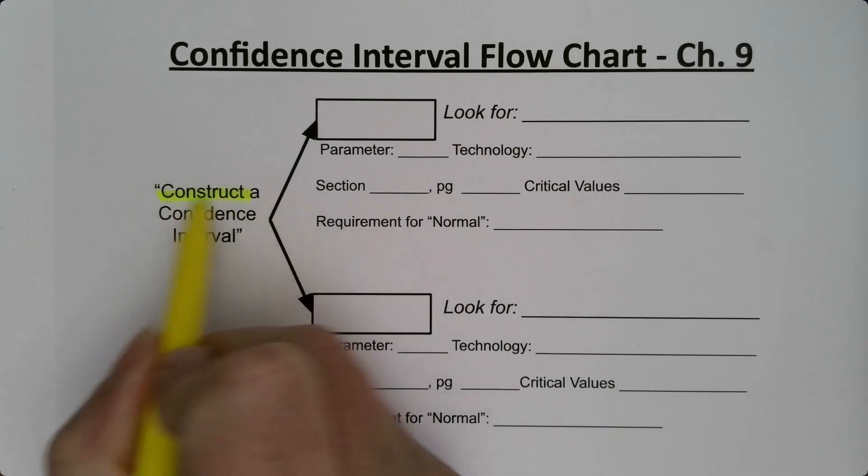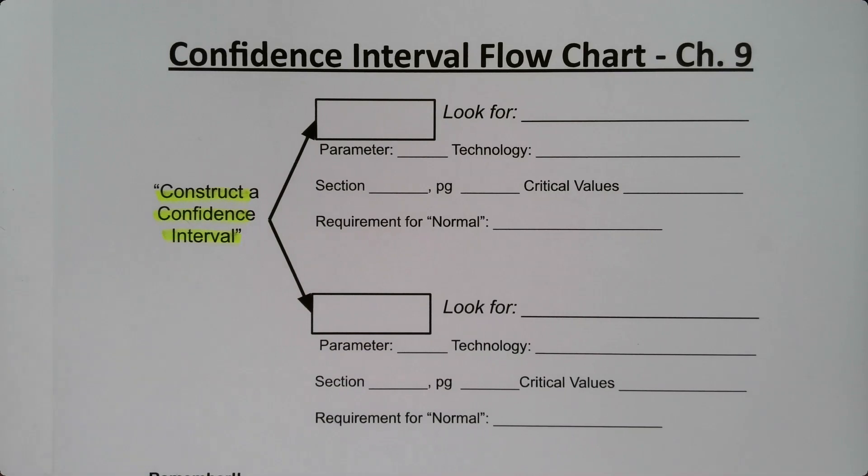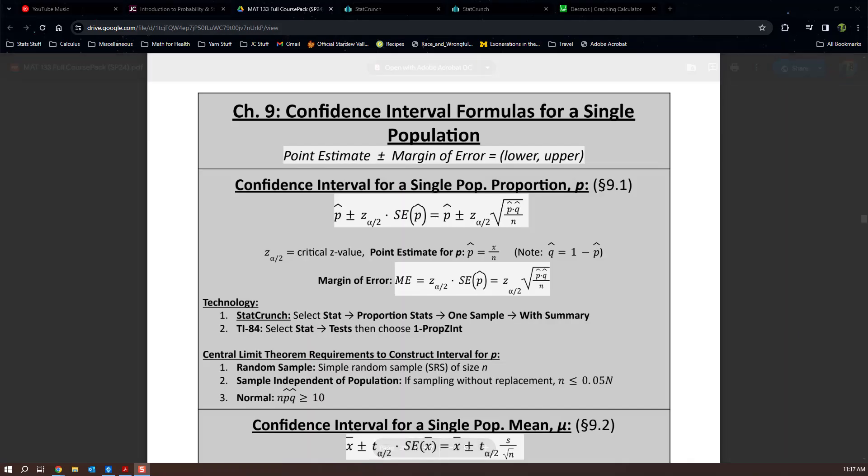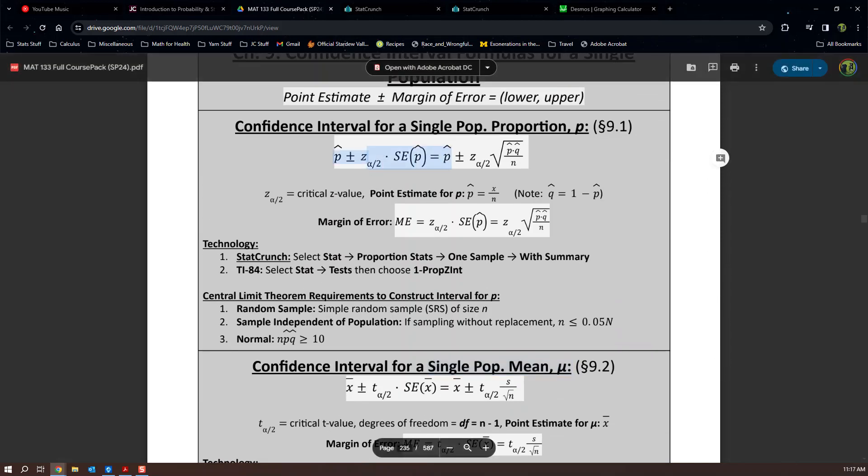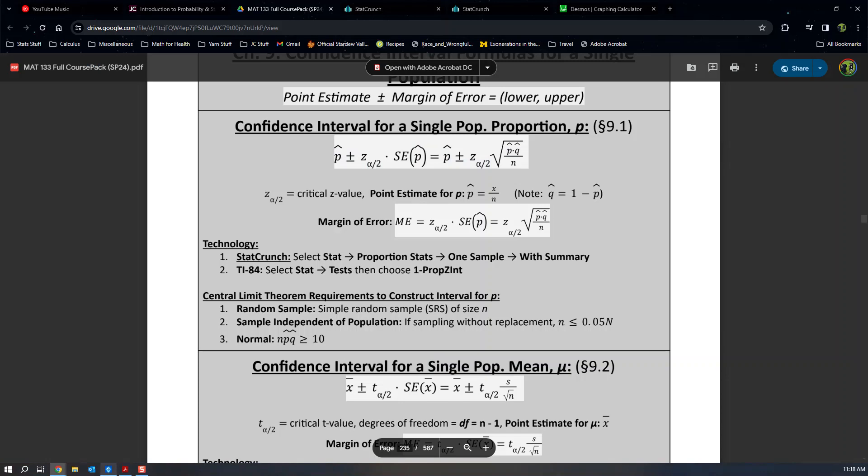Alright, so if the instructions tell us that they want us to construct a confidence interval, that means you're going to be choosing one of the two confidence interval options. So if I look at our exam notes packet, which is right here, I have it electronically from the course pack, we can see that we have a confidence interval for proportions and a confidence interval for means. Now technically there are really, it's two sides of the same formula.